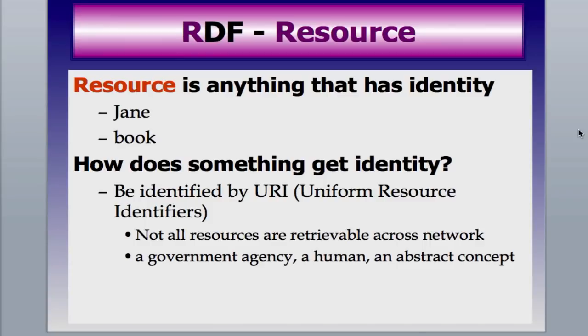The R in RDF is resource. A resource is anything that has an identity — in this case, Jane or the book. They can be identified with a URI, a Uniform Resource Identifier. Not all resources are retrievable across a network; a URI is just an identifier, similar to a namespace used in XML. Examples of a URI could be a government agency, a human, somebody's pet, or even an abstract concept such as love or marriage.